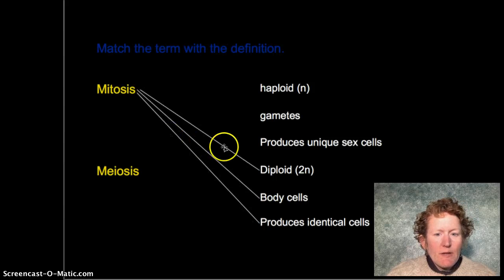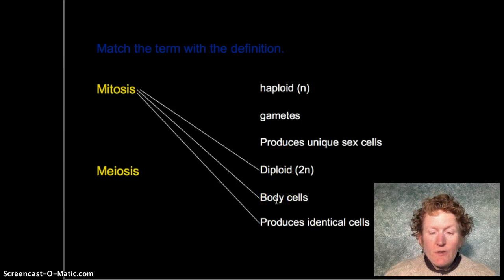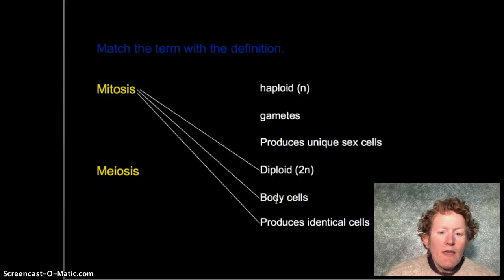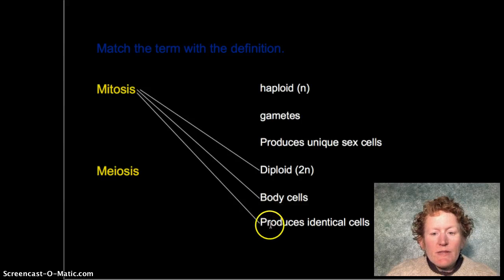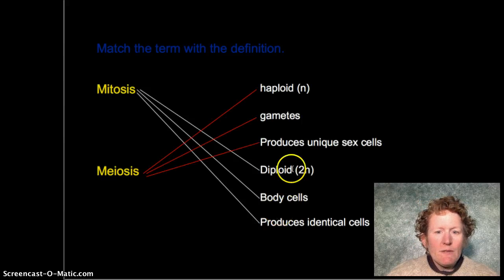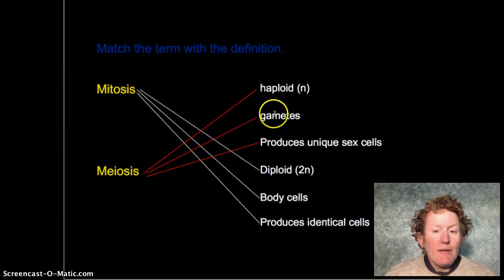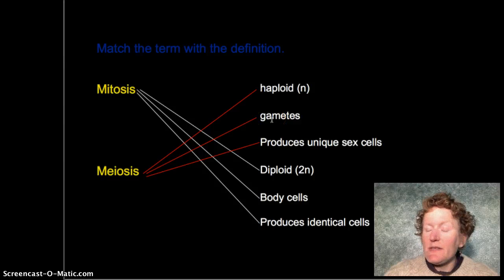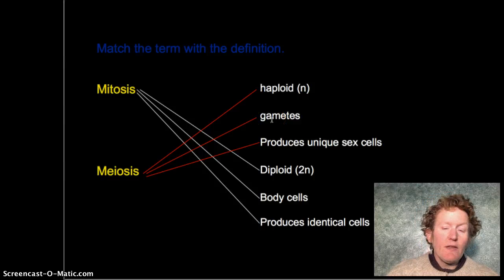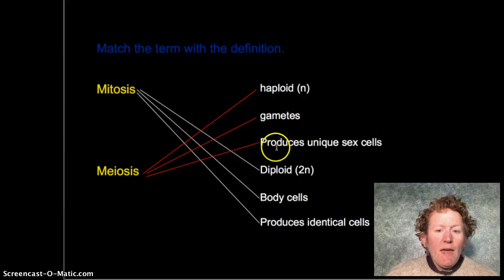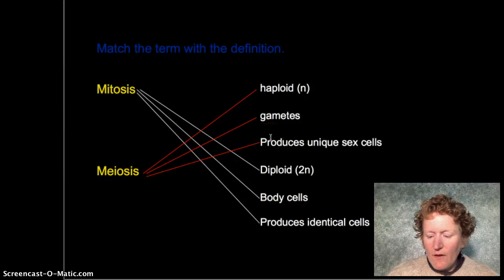Here are the correct answers. Mitosis produces diploid cells — it produces body cells like those in your nose, toes, eyes, and knees — and it produces identical, exact-copy cells. Meiosis produces haploid cells with half as many chromosomes. It only produces gamete cells — not cells in other parts of your body — and it produces unique sex cells. Those eggs and sperm are each unique — they're all different.